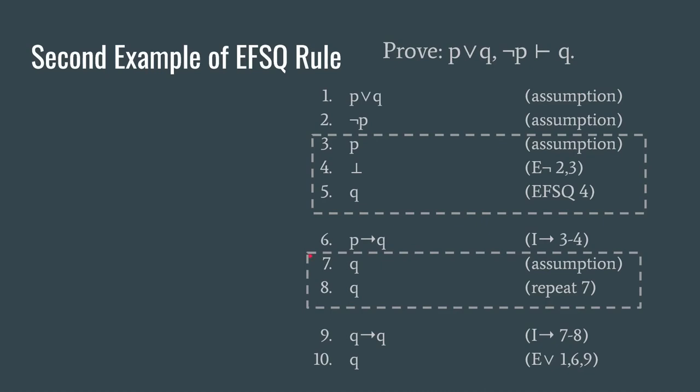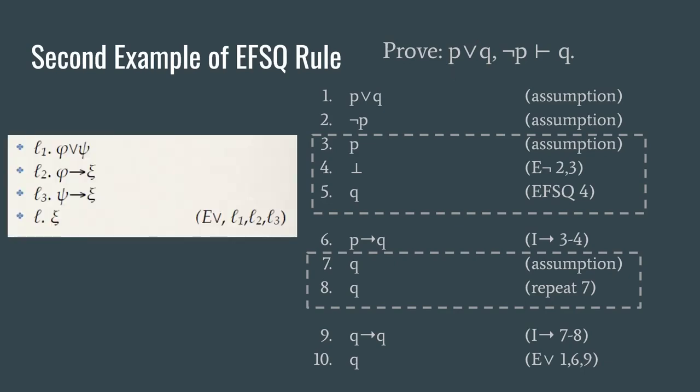Here's a second example. Here's the idea. One of our premises is a disjunction so we want to try to use the elimination of disjunction rule. How did that rule work? Well remember to eliminate a disjunction you need to look at the two disjuncts and then you need to get an arrow statement for each one where each disjunct is in the antecedent position of one of the arrow statements.